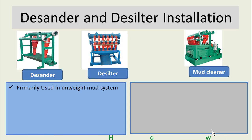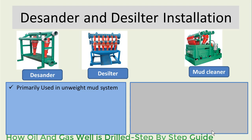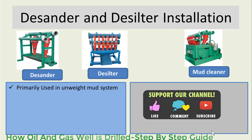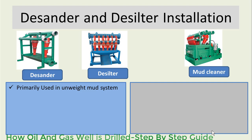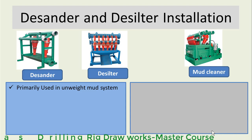When desander and desilter are installed separately on the mud tank, they are primarily used in an unweighted mud system. Unweighted mud system means the mud does not contain commercially available weighting material like barite. We don't have any barite in the drilling fluid.